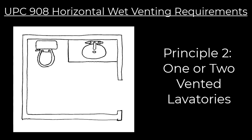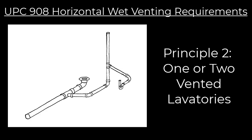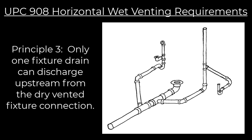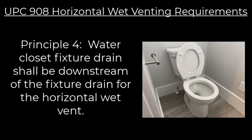UPC horizontal wet vent principle two: the wet vent is to be vented by one or two vented lavatories, so we're focusing on using a lavatory to wet vent. Principle three: only one fixture drain can discharge upstream from the dry vent connection. This is similar to what we see in the International Plumbing Code, just worded differently — basically every fixture has to have an individual connection to the wet vent.